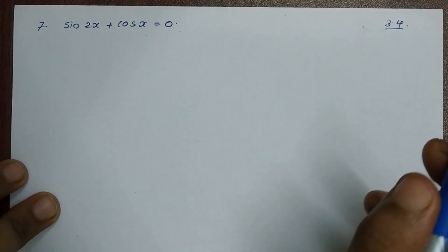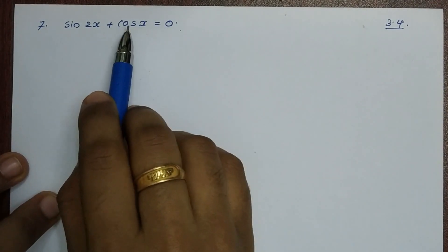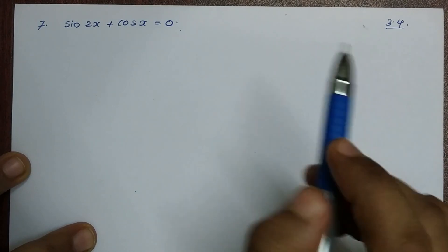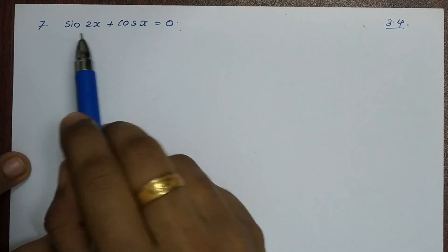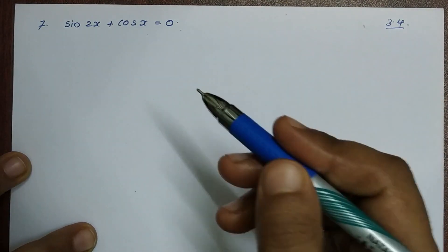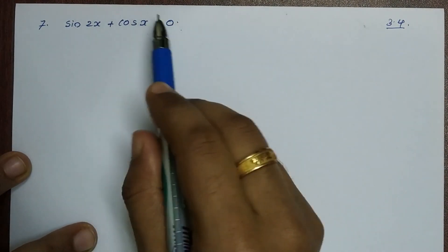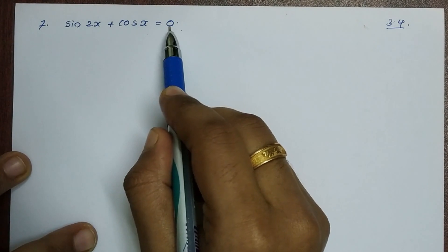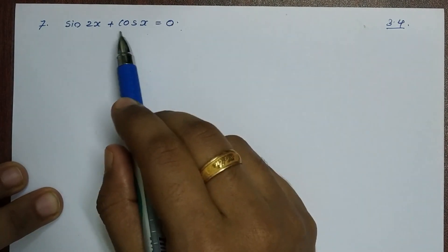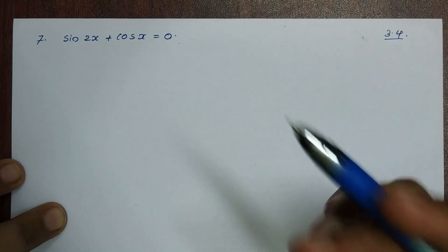We need to find the general solution. We cannot directly apply the general solution formula here because we have a sum of two terms. So we need to convert it into a product, then set each factor equal to zero.